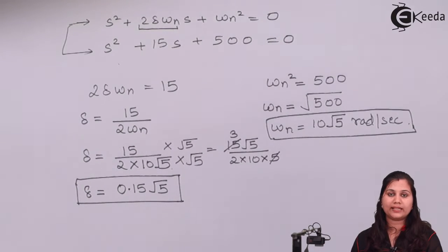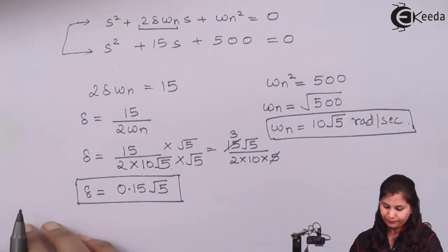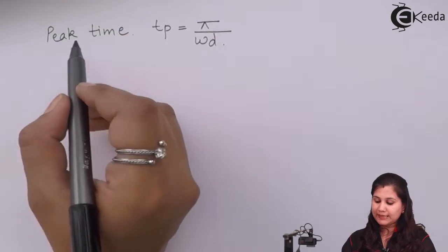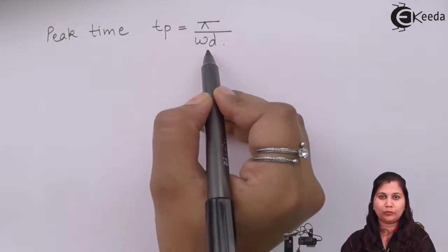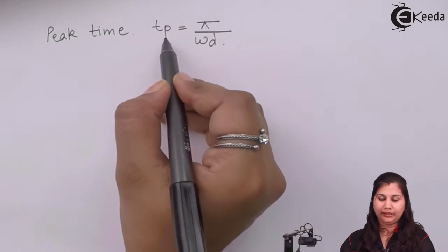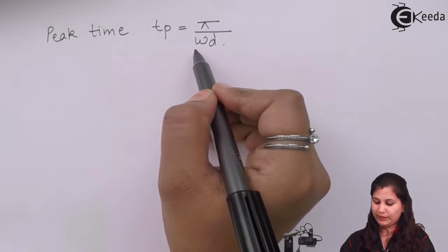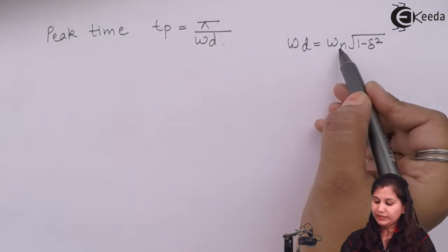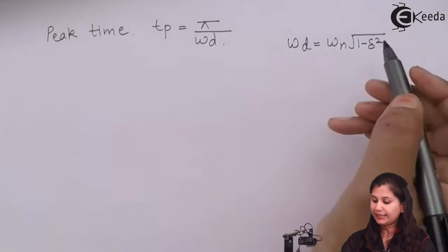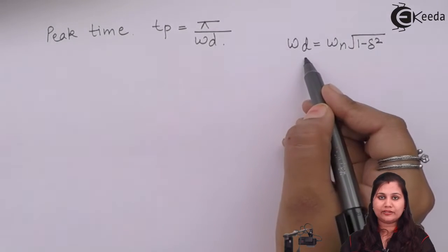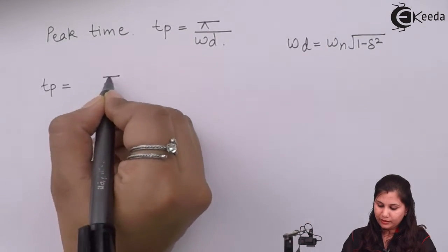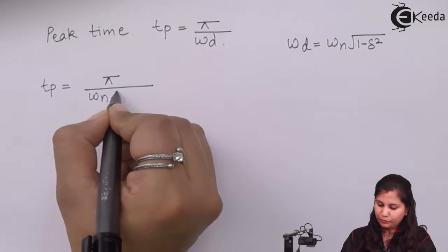Now using these two values we will find the rest of the transient response specifications like peak time, rise time, and maximum overshoot. Peak time tp = π / ωd, where ωd is the damped frequency: ωd = ωn √(1 − δ²). So tp = π / (ωn √(1 − δ²)).